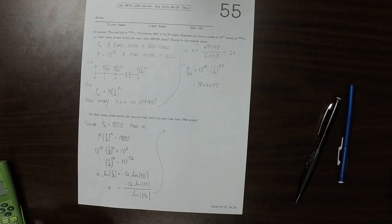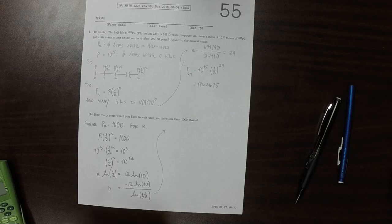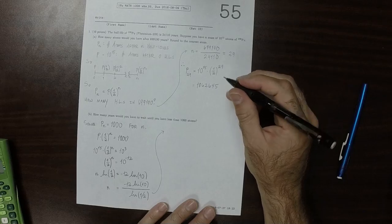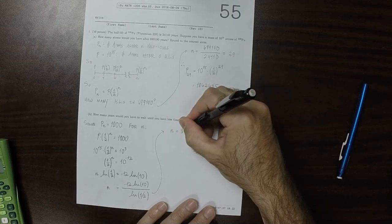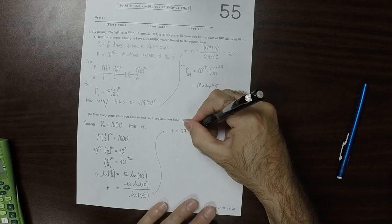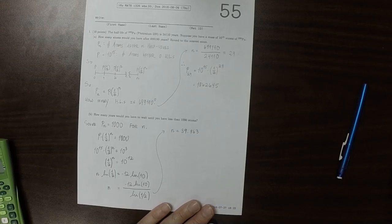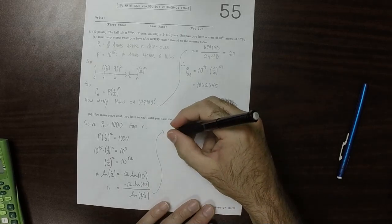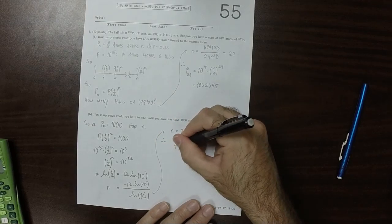Plugging that into the machine. That says that we would need N equals 39.863. So we would need to undergo 39.863 half-lives.